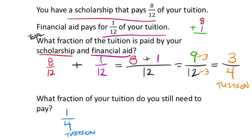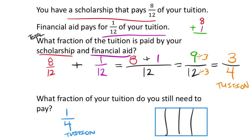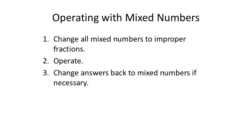Now, what fraction of your tuition do you still need to pay? If three of the four parts are already paid, you have one of the four parts left to pay. Using a box model divided into fourths: three parts are covered, leaving one part remaining. You could also compute this as one full tuition minus three-fourths, which gives one-fourth.